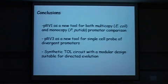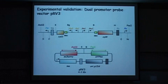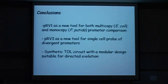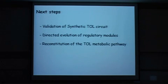So our conclusions, we have this new system for both multicopy and monocopy promoter comparison in multicopy for E. coli and monocopy for P. putida. A new system for bidirectional promoters, because in this case we have one promoter for each side. And we have also the modular design of the refactorized TOL circuit, which allows directed evolution of each part. And our next step, we are working now in the validation of the TOL circuit, the refactorized one, in the directed evolution of the parts, exchanging each one, and in the reconstruction of the entire metabolic pathway using now this new circuit for Putida.